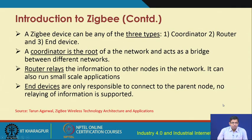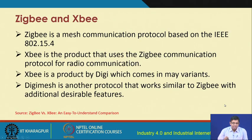A Zigbee module can be of three types: a coordinator, a router, and an end device. The coordinator is the root of the network and acts as a bridge between different networks. The router relays information to other nodes in the network. End devices are only responsible for connecting to the parent node — no relaying of information is done by end devices.